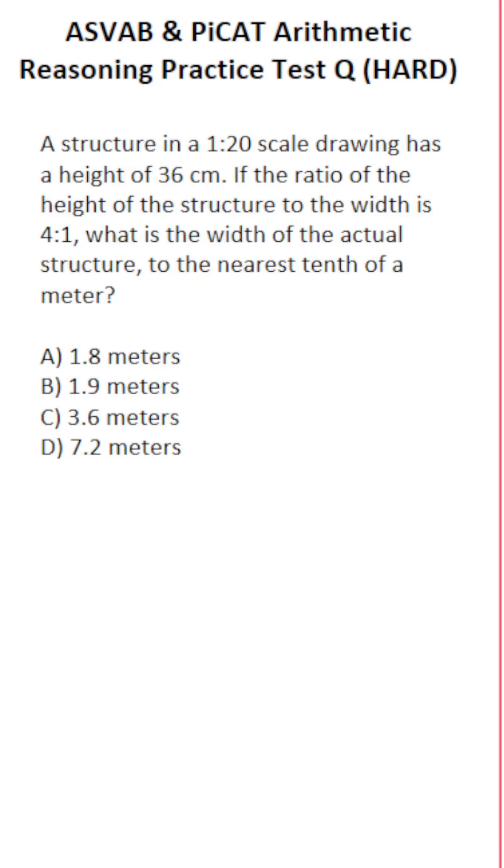So let's start by solving this one with our first proportion. We know the drawing has a scale of 1 to 20, so that's 1 to 20 equals. This 1 represents the scale, this 20 represents the actual size. We know the height of the scale drawing is 36 and the actual size of the structure is unknown, so we'll call that x.